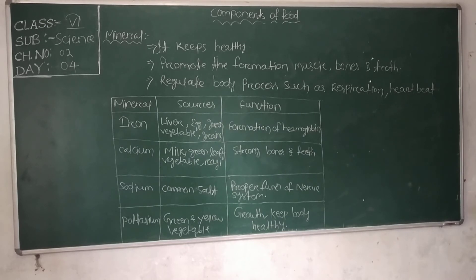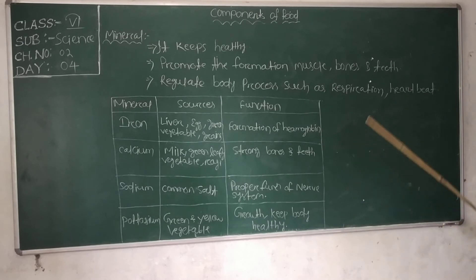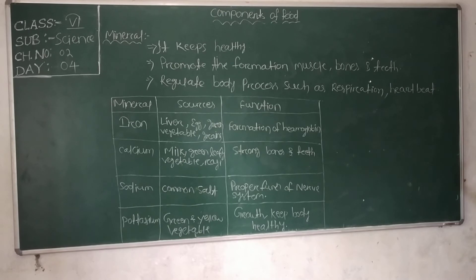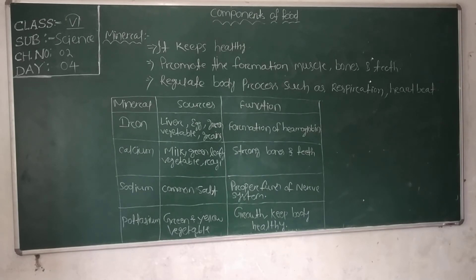The function of iron is the formation of hemoglobin. Hemoglobin is present in our blood and is the oxygen-carrying pigment found in red blood cells. The deficiency of iron causes anemia.